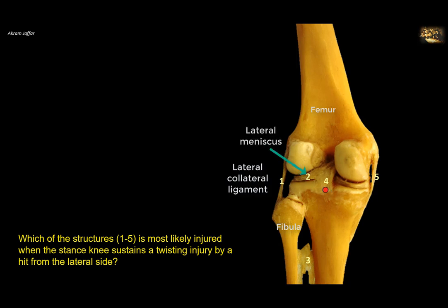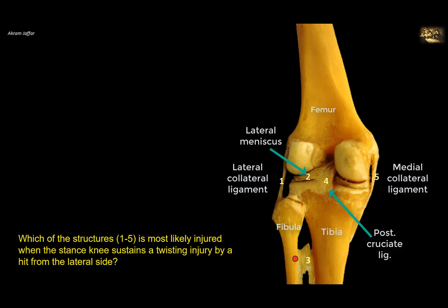Structure 4 is the cruciate ligament — specifically the posterior cruciate ligament — attached to the posterior aspect of the tibial plateau, passing forwards and medially to attach to the inside of the medial condyle of the femur. Structure 3 (unlabeled) is the medial meniscus. Structure 5 is the medial collateral ligament, or tibial collateral ligament, extending between the femur and the upper medial surface of the tibia. Structure 3 is an interosseous membrane between the tibia and fibula, not involved in knee joint injury.